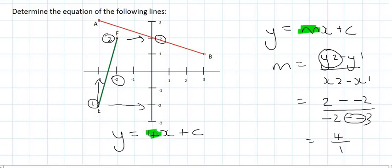Next would be to find the value of c, which we cannot see on this graph. But that's okay, because we just substitute. I'm going to use F's coordinates, which are (-2, 2). Always make sure that when you're doing this, you understand where I'm getting these numbers from.